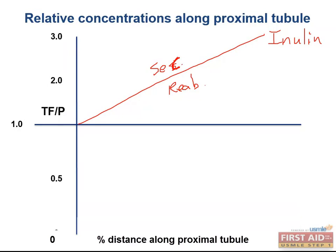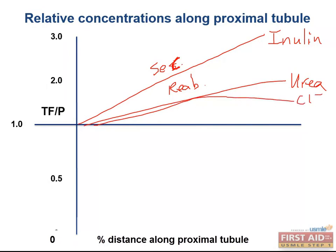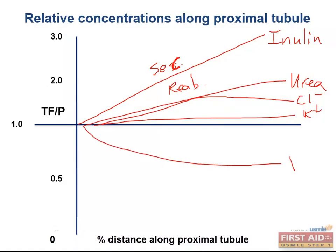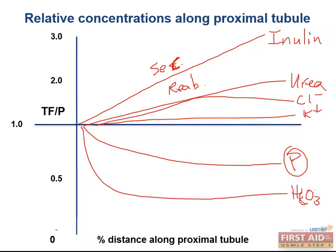There are a couple of important points here. First, the vast majority of substances have net reabsorption in the proximal tubule. This includes things like urea, ions like chloride, potassium, phosphate, and bicarbonate, as well as molecules like amino acids and glucose.